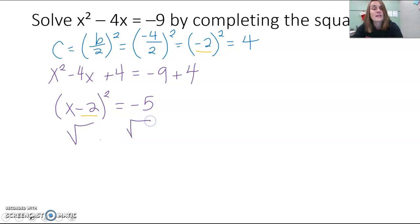Take the square root of both sides. The square and the square root cancels on the left. And so we have just x minus 2 equals, again, anytime you take the square root of a square, you have a plus or minus, the square root of negative 5.